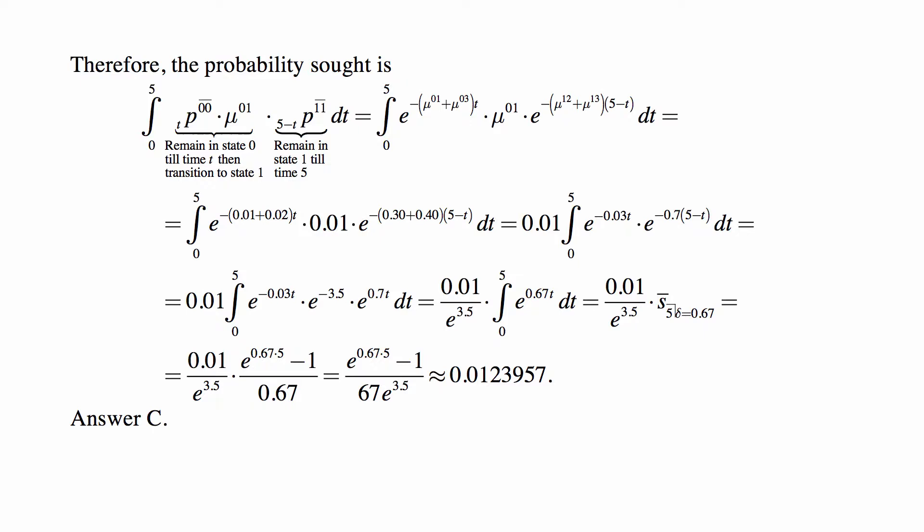And then, and the force is constant, so that's why it's just mu 0, 1. Normally it would depend on the time t, but it doesn't. The force is constant. And then, for the remainder of the period, you have to stay in state 1, and that's a period of time from time t till time 5, so the length of that time is 5 minus t, and the probability of remaining is this p11 with a line above it of a period of time 5 minus t.